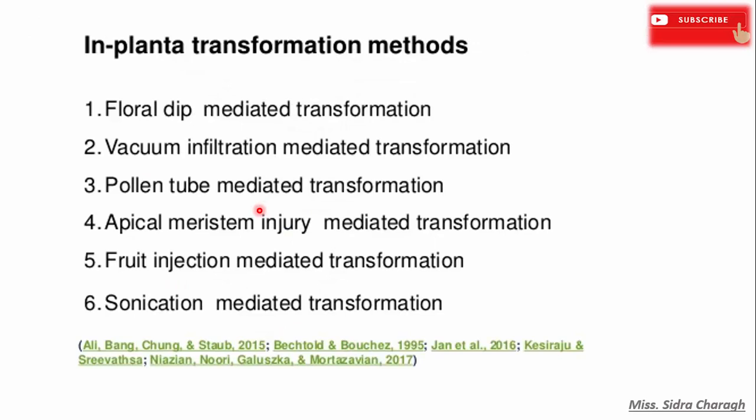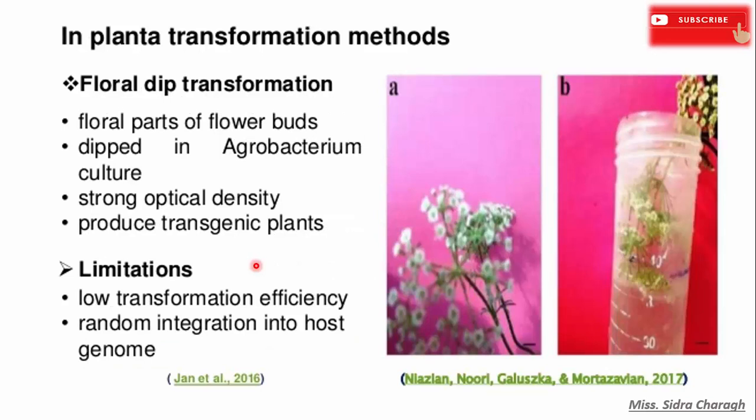The first method is floral dip transformation. In this method, plants are grown to a stage when they have just started to flower, and then plants are briefly dipped in a suspension of Agrobacterium with surfactant. Plants are maintained for a few more weeks until mature, and then progeny seeds are harvested. Its limitation is low transformation efficiency and random integration into the host genome.